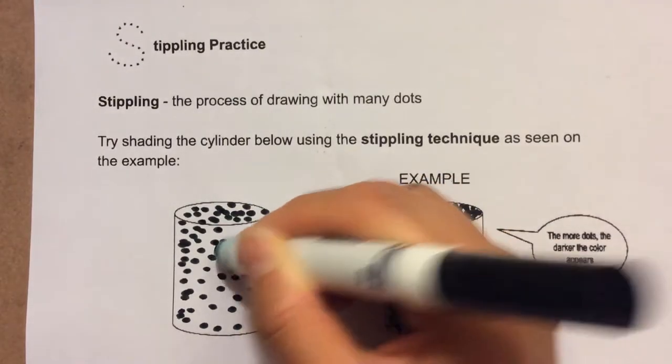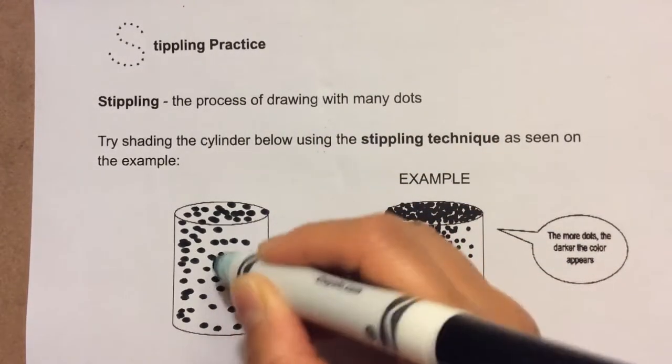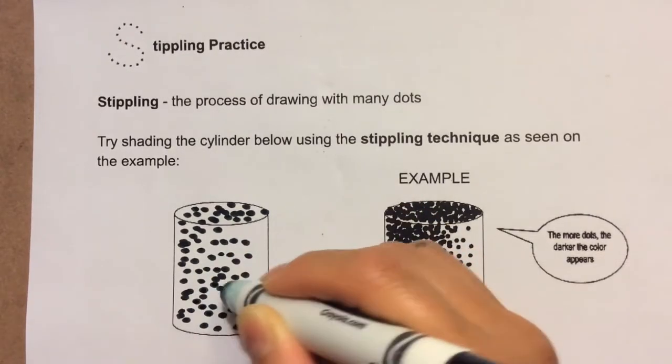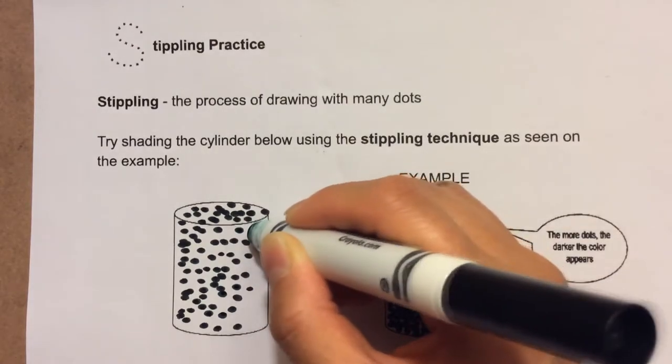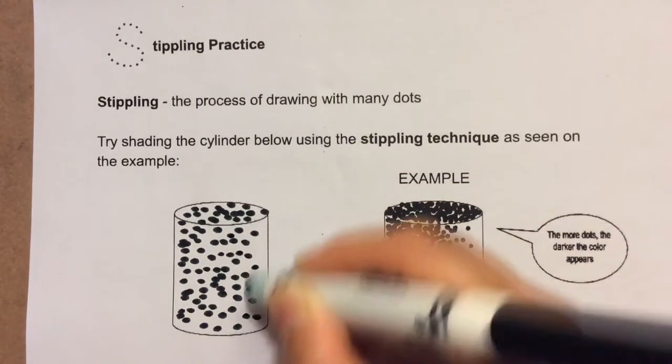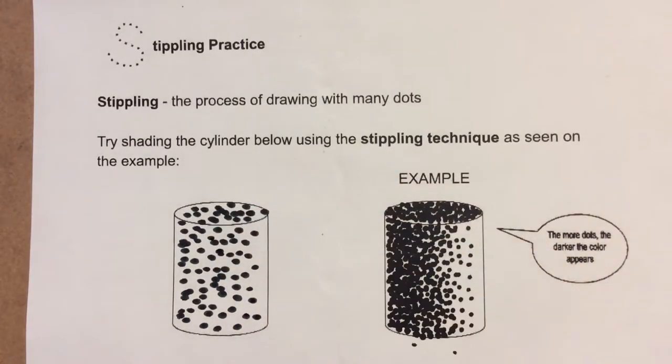If I want to make it darker, I can always add dots to the white spaces in between. So I think I filled out most of the cylinder with dots for now. So I'm going to take a step back.